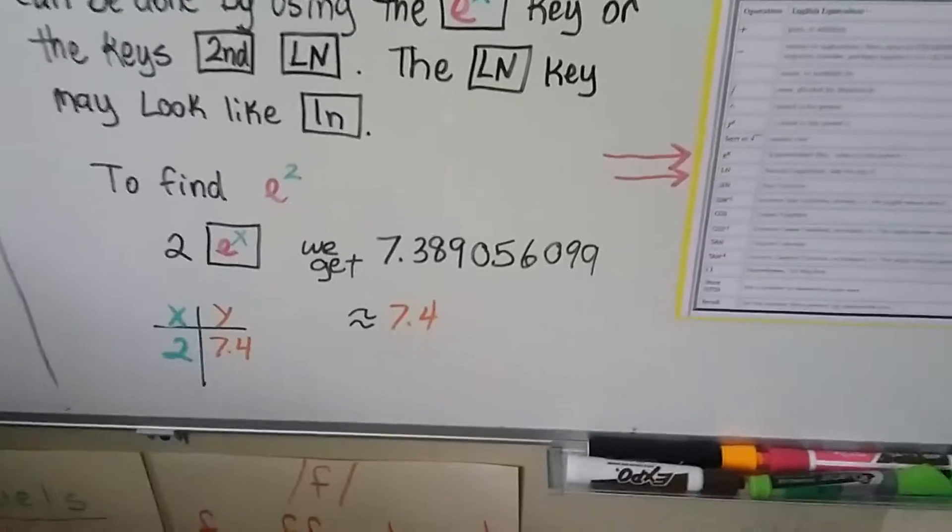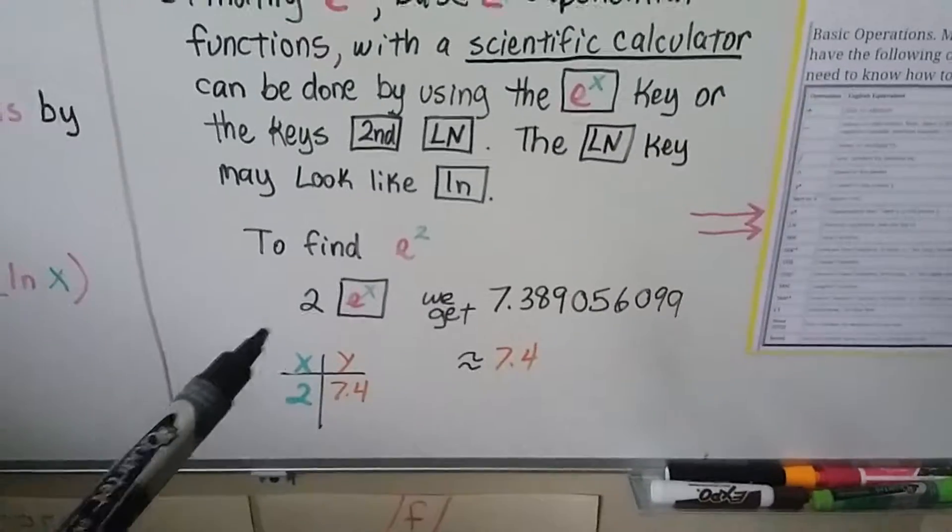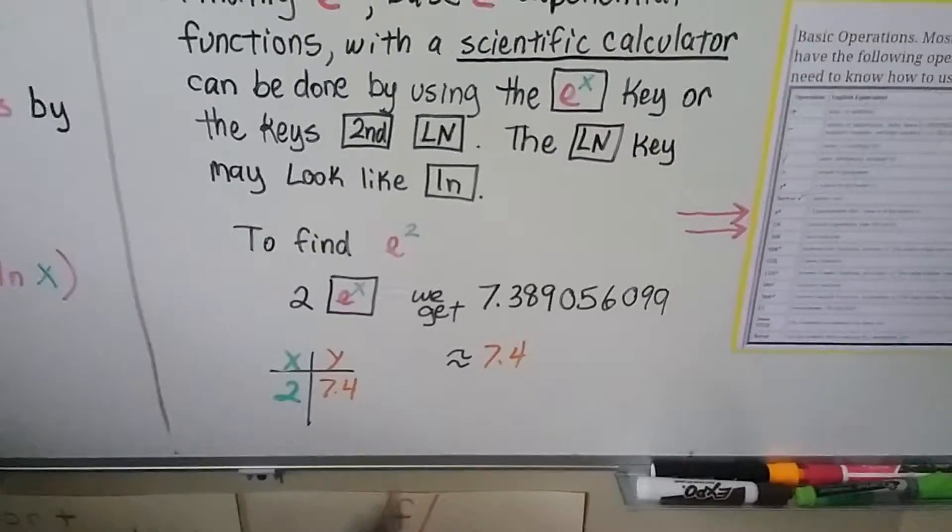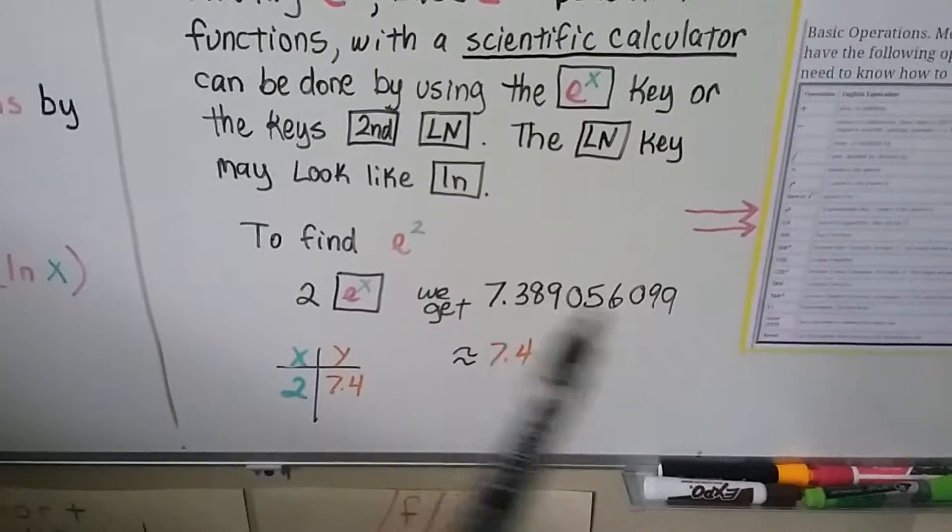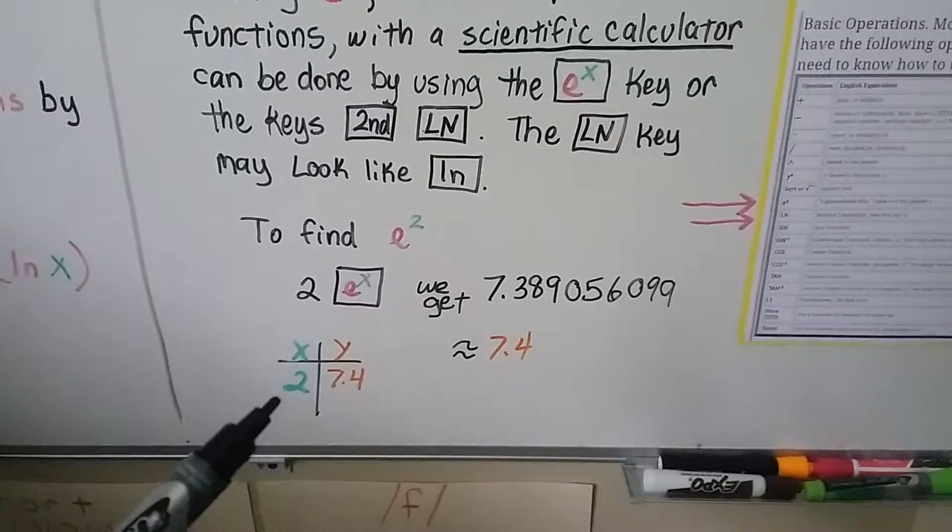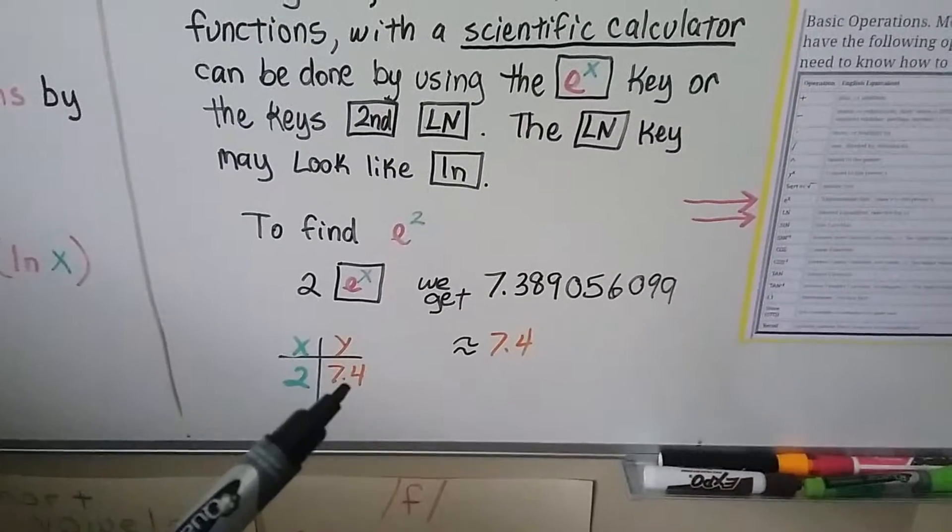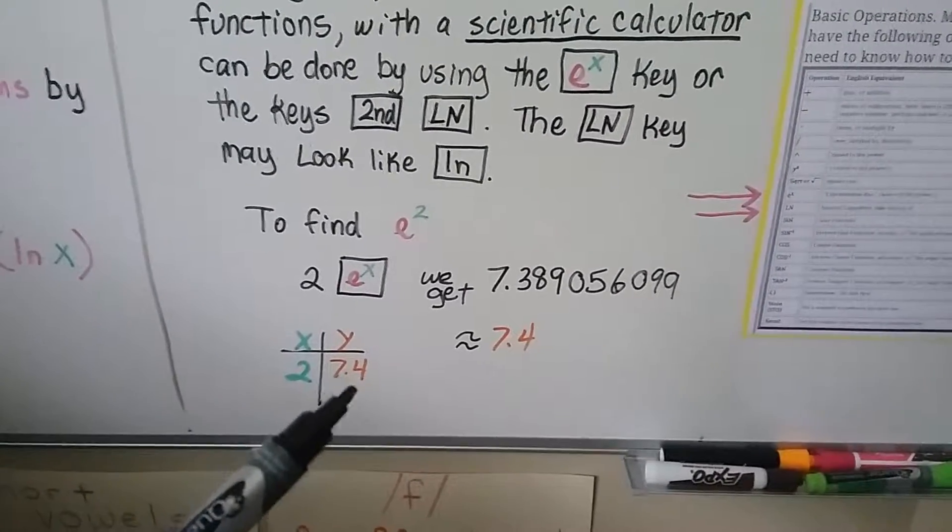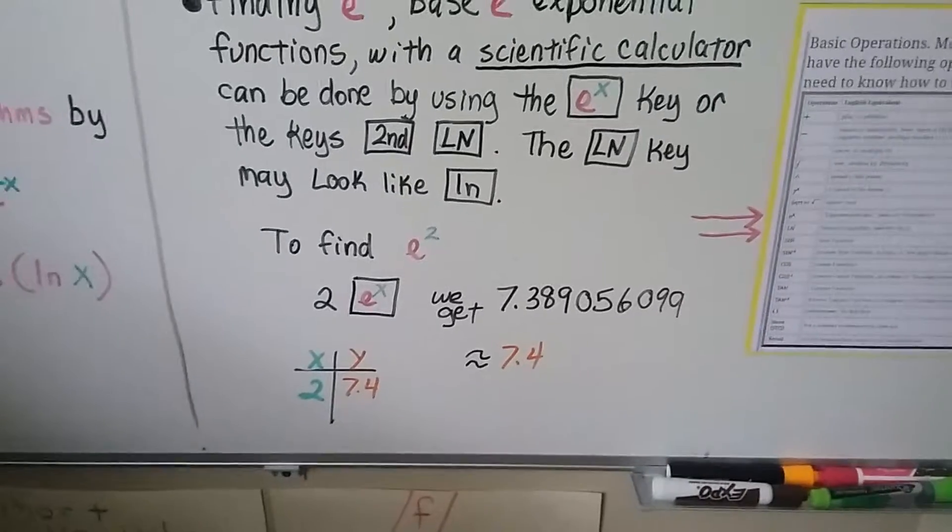To find e squared on a scientific calculator, you hit 2, and then that little e to the x button. You'll get this nice long decimal that we can round to 7.4. That means our x value is a 2, and our y value is a 7.4. We have an ordered pair that we can graph.